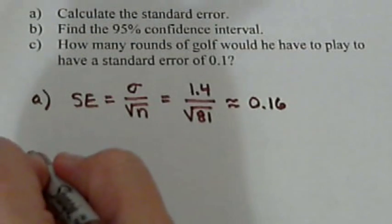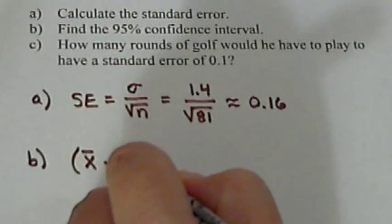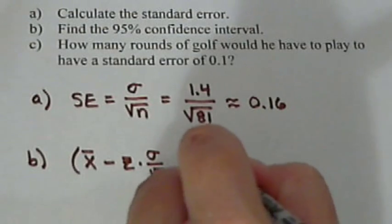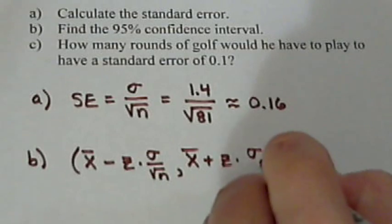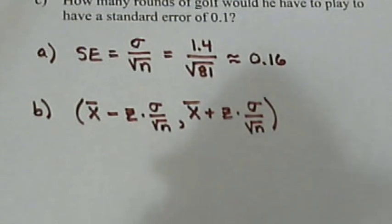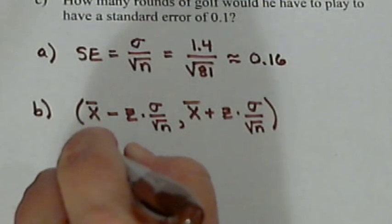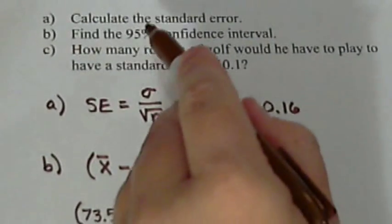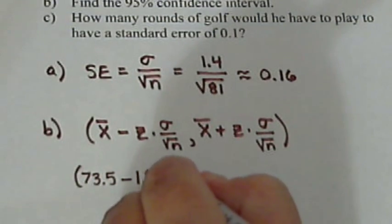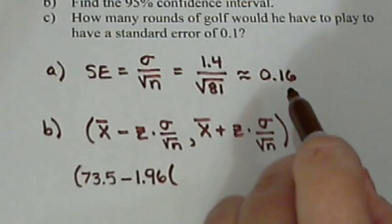Next we want to find the 95% confidence interval. Now this would be the mean minus a z value times our standard error, followed by the mean plus a z value times the standard error. From above, we've got the mean of 73.5. And the z value we're going to use, since this is asking for a 95% confidence interval, will be 1.96. And then this part right here is the standard error which we calculated up here to be 0.16.